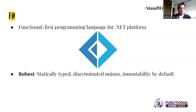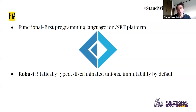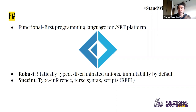Nowadays they are changing the promotion a bit and not insisting as much on the functional part. They insist on three characteristics. The first is that it's robust — a functional programming characteristic — because it's statically typed, it has discriminated unions which are great to model your domain, and it has immutability by default as most functional programming languages. It's also succinct: it has type inference, meaning even though it's statically typed, you don't have to write types all the time — the compiler can infer them most of the time. It also has a terse syntax that doesn't get in your way — you don't need to write brackets most of the time, using whitespace is enough.